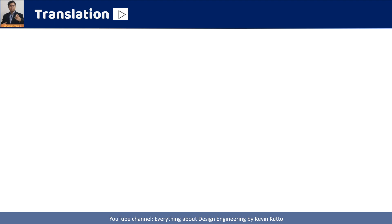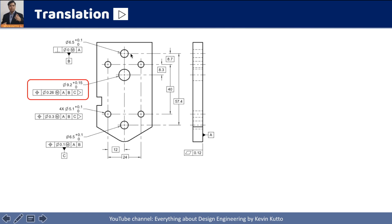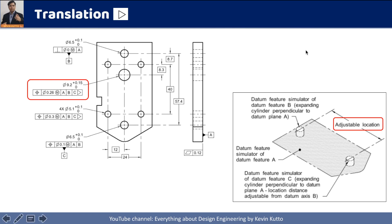The next modifying symbol is translation. In this example, the translation symbol is associated with datum C. It means that the datum feature simulator for datum C is not rigidly fixed with datum A's simulator. Instead, it can translate with respect to datum B. Datum B is fixed and rigidly constrained, but the datum C simulator can be adjustable.